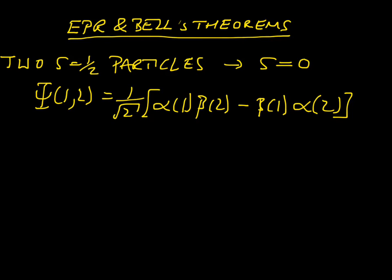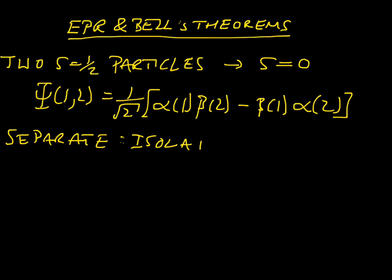What's happening here is we're putting either particle 1 into the spin-up state and particle 2 into the spin-down state, or vice versa. Having done that, we then separate the particles in a particular way — we keep them isolated from the environment. That means that there is no way for the particles to lose coherence, and they retain their singlet state.